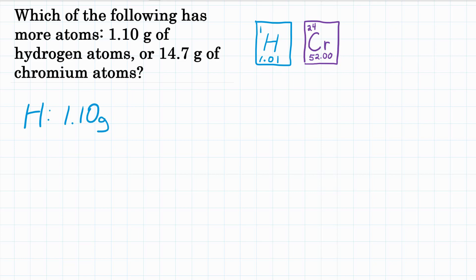And we're also dealing with chromium. We have 14.7 grams of chromium. More grams than we have of hydrogen.